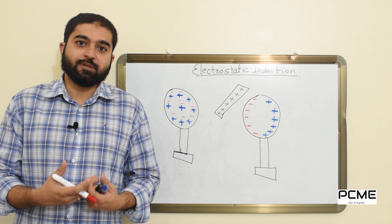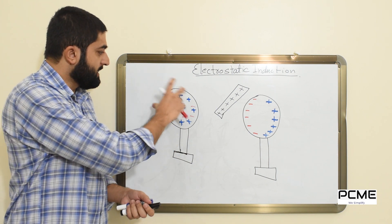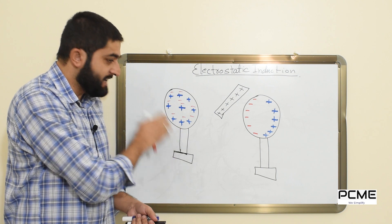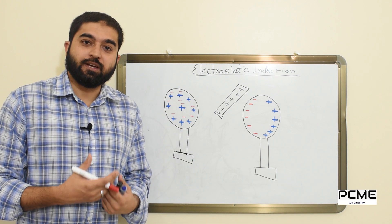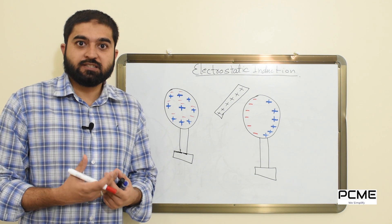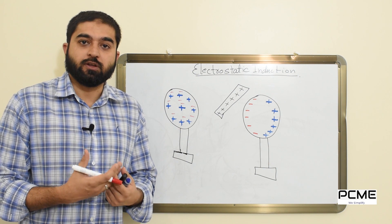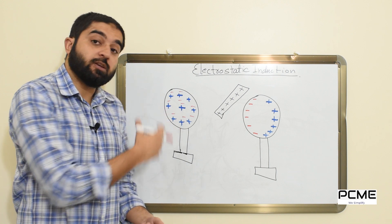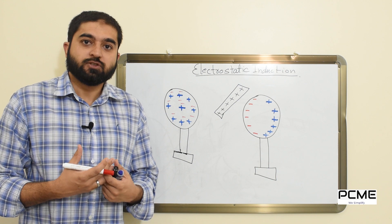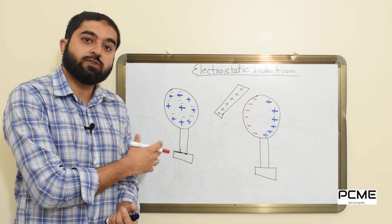Let me try to explain this with the help of a diagram. What you are looking at here is a metallic sphere which is mounted on an insulated stand. We need to understand why this sphere is mounted on a stand made of insulated material — the reason is to prevent the leakage of any charge which is developed on the sphere.